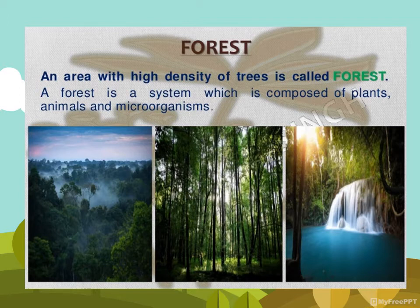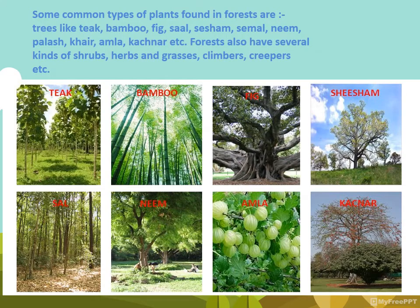A forest serves various purposes for human beings as well as nature, and hence forest is an important resource. A forest is a system composed of plants, animals, and microorganisms. We can see a number of plant species, hence we call it a home for plants, animals, and microorganisms. Common plants found in forests include teak, bamboo, sal, shisham, fig, neem, amla, and catechu.